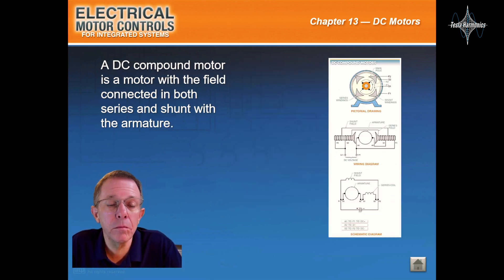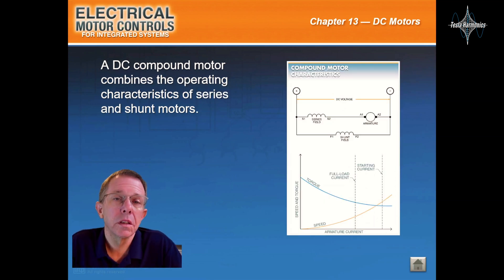A DC compound motor is a motor with the field connected in both series and shunt with the armature. A DC compound motor combines the operating characteristics of series and shunt motors.